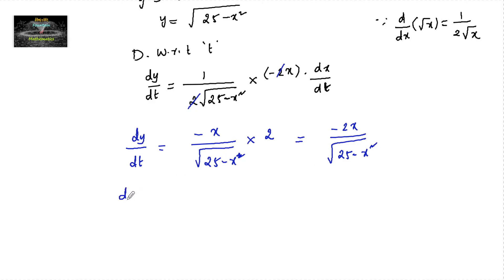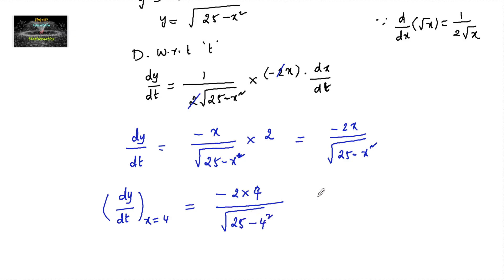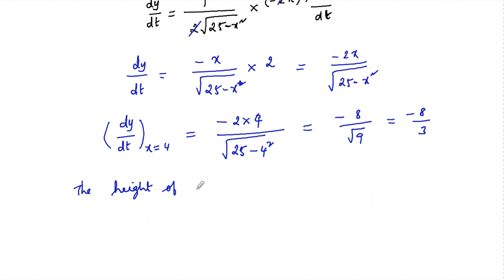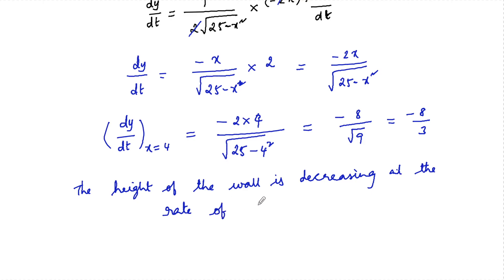Now we find dy/dt at x = 4, when the foot of the ladder is 4 meters away from the wall. Substituting x = 4: dy/dt = −2 × 4 / √(25 − 16) = −8 / √9 = −8/3. Since we got a negative sign, the height is decreasing at the rate of 8/3 cm per second. So dy/dt = −8/3; if using the word 'decreasing,' state the rate as 8/3 cm per second.